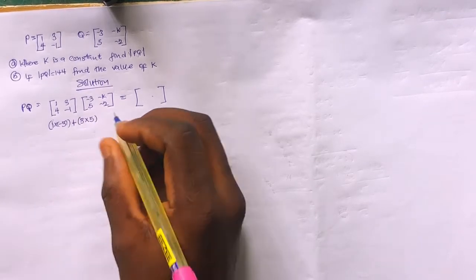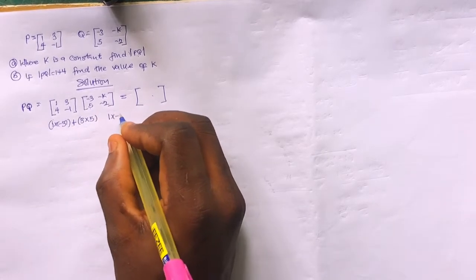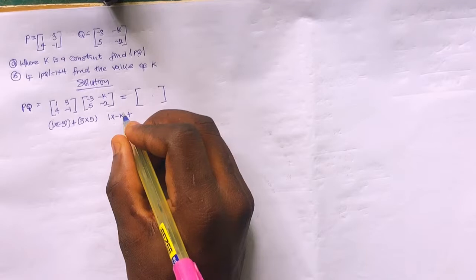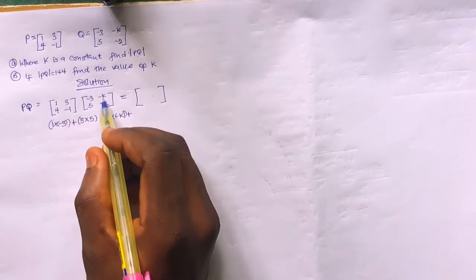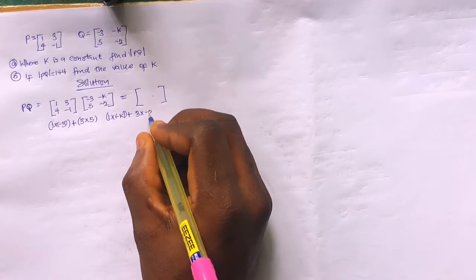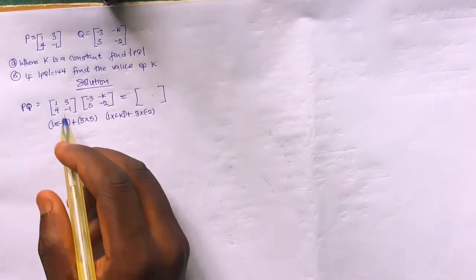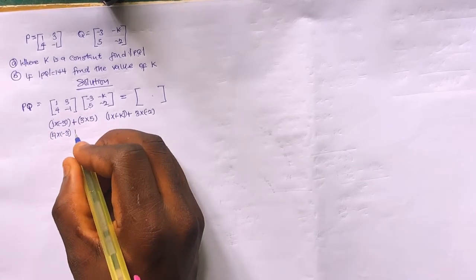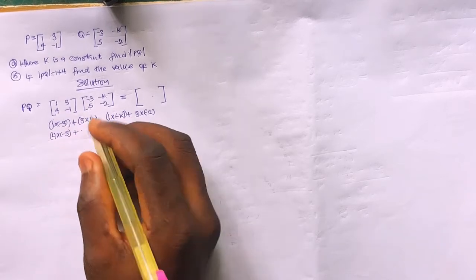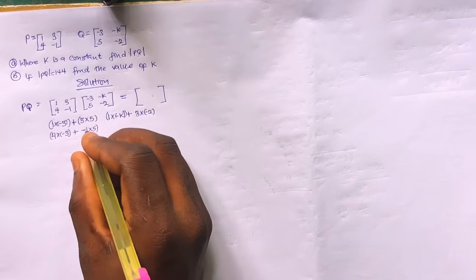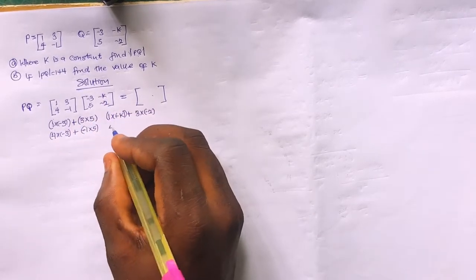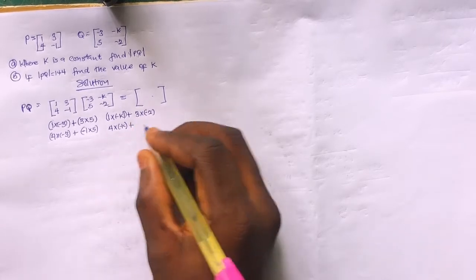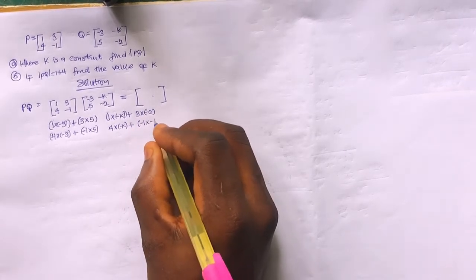For the first entry: 1 times (-3) plus 3 times 5. For the second entry: 1 times (-k) plus (-1) times (-2). For the third entry: 4 times (-3) plus (-1) times 5. For the fourth entry: 4 times (-k) plus (-1) times (-2).